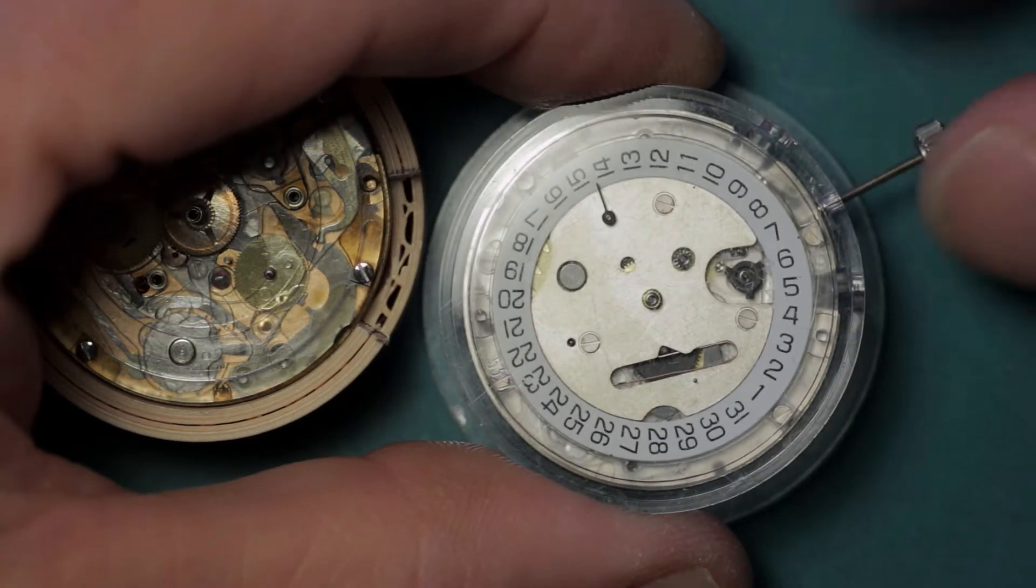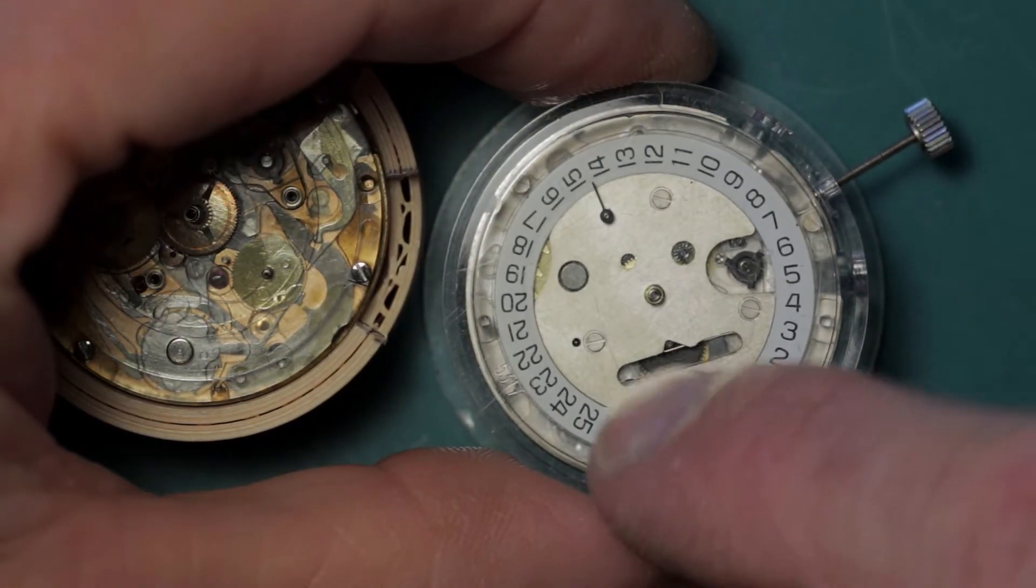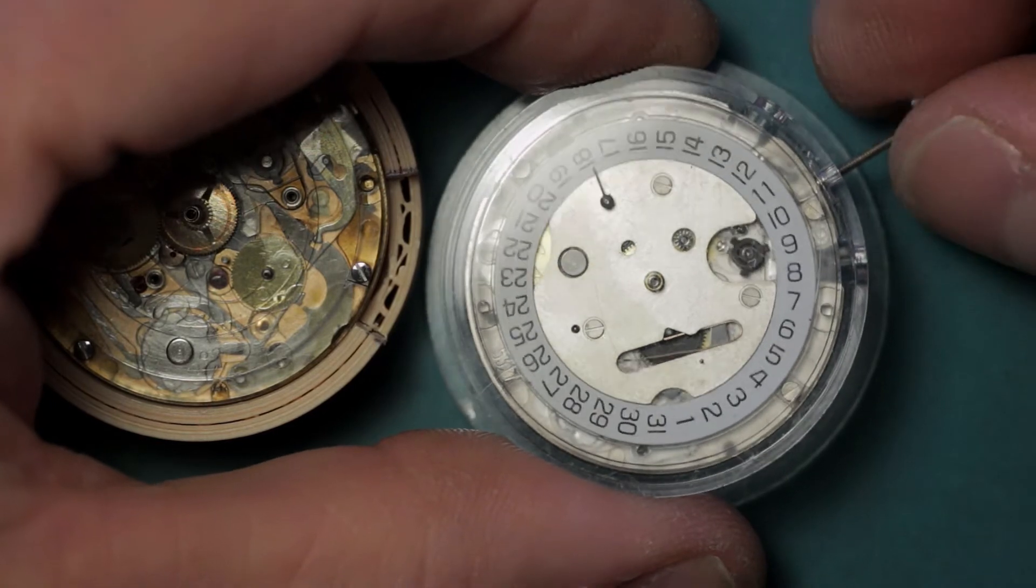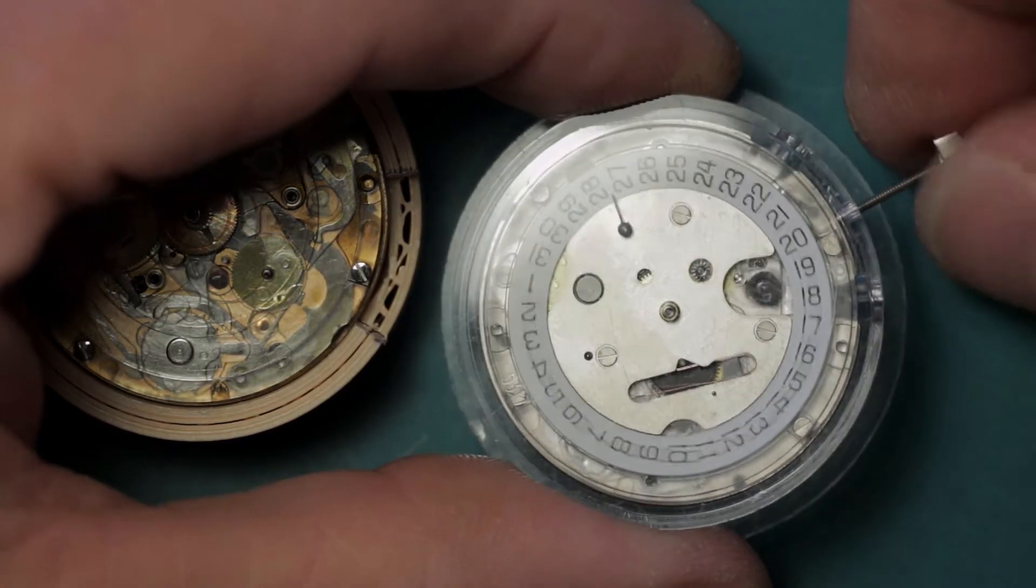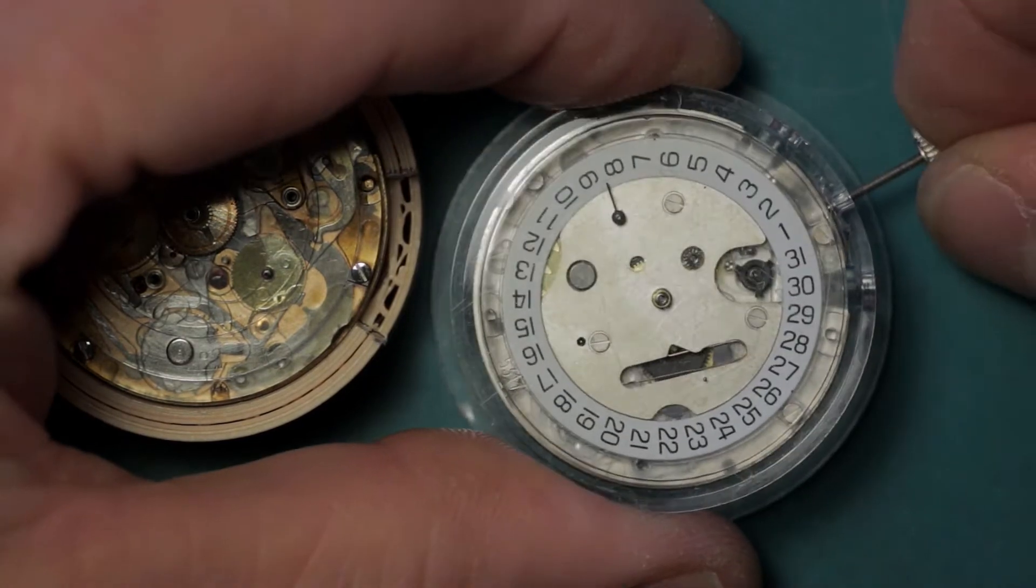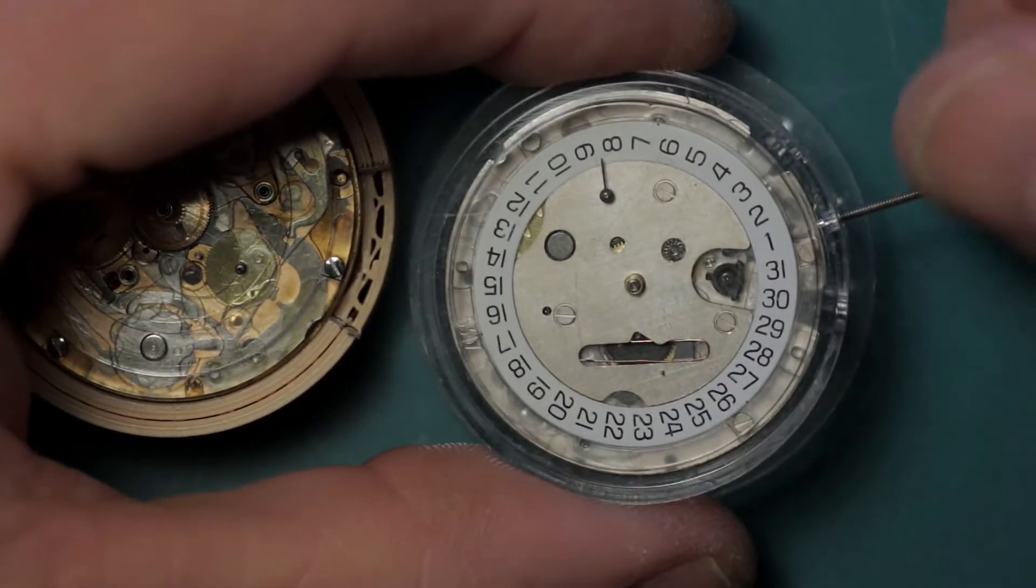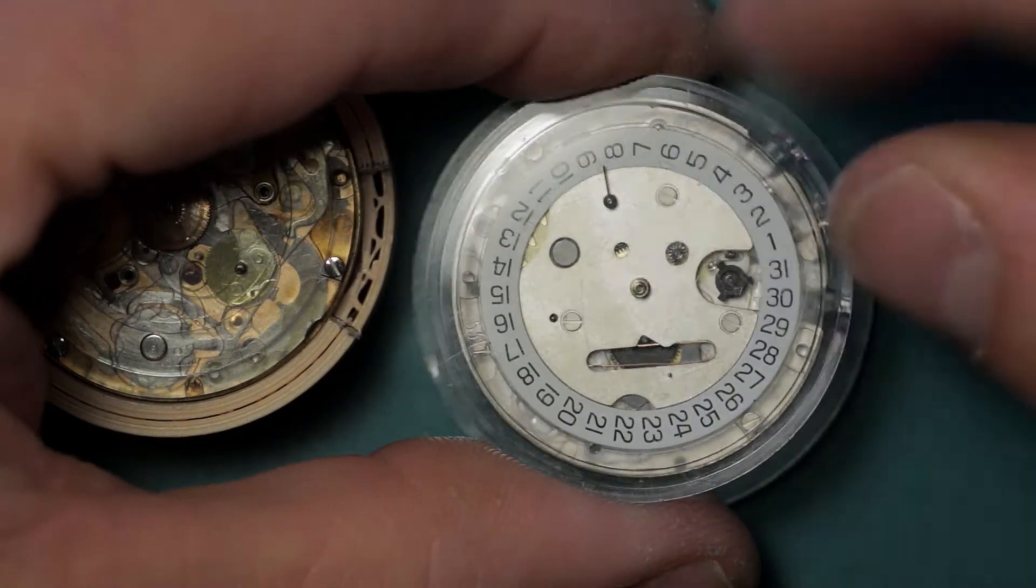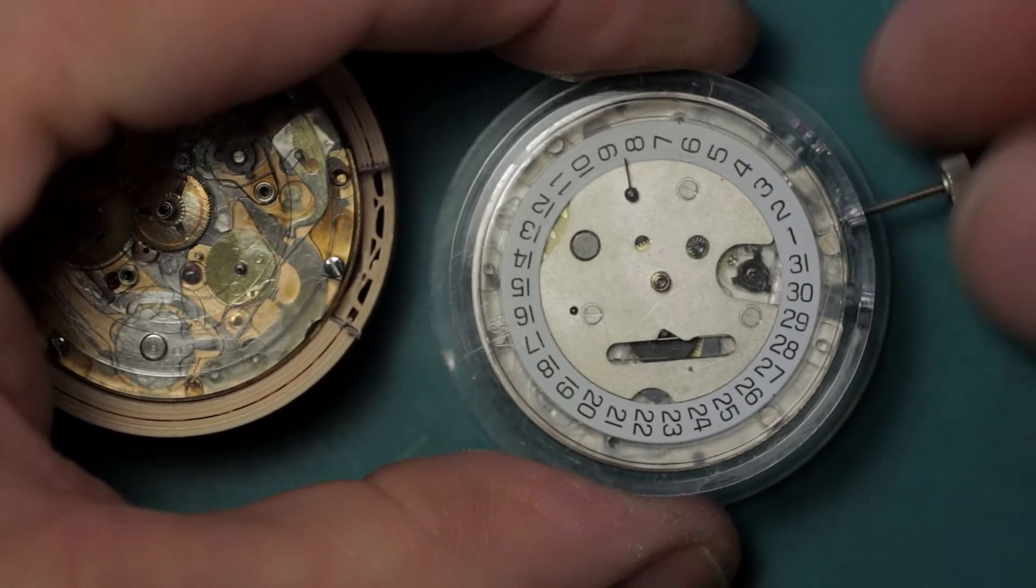And flips it around. You can see the jumper spring down here and the little spring which feeds in through this mouth-like slot. And of course, you can see as I rotate that, that does a rapid date change.